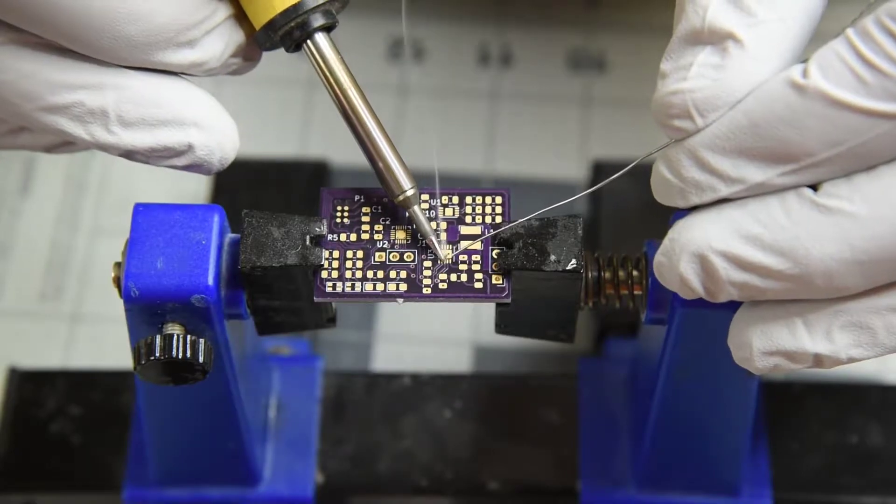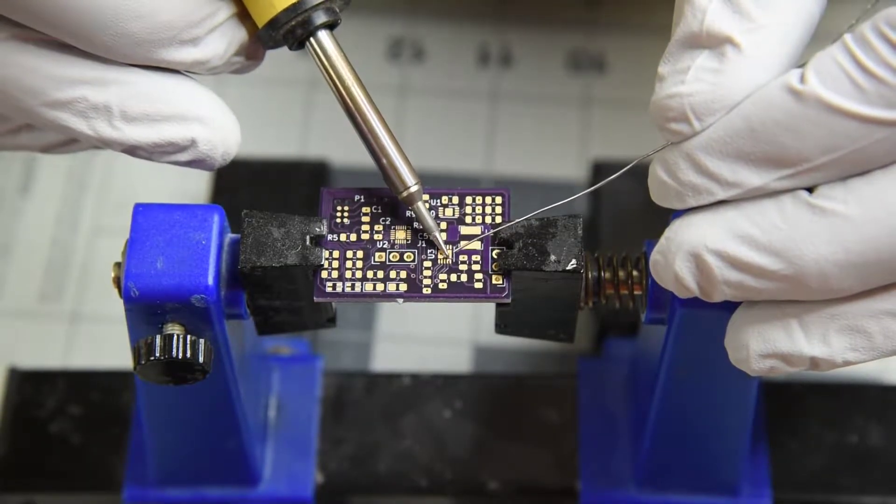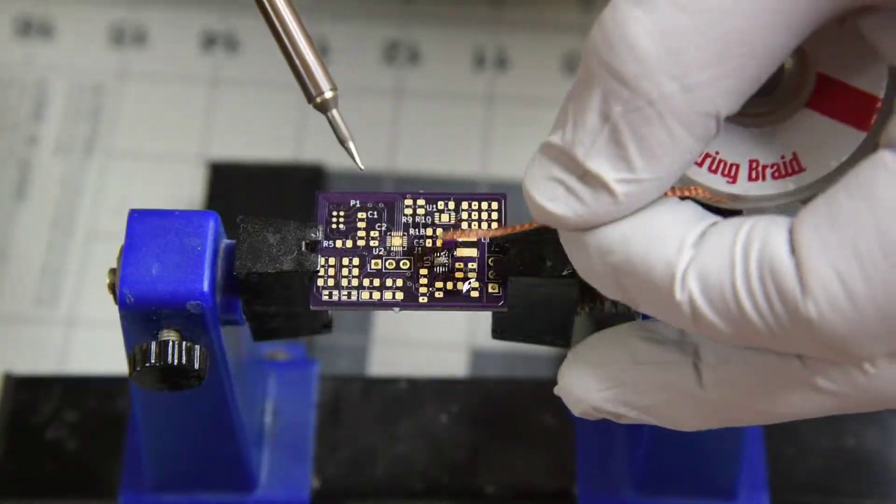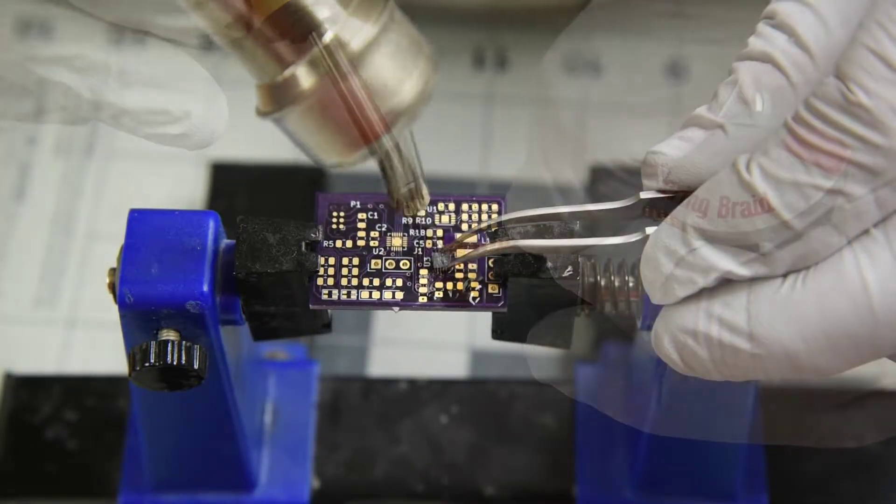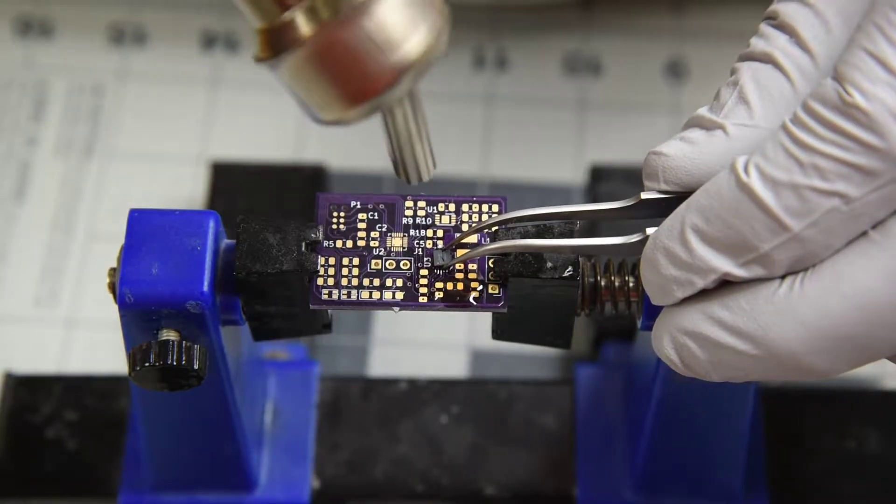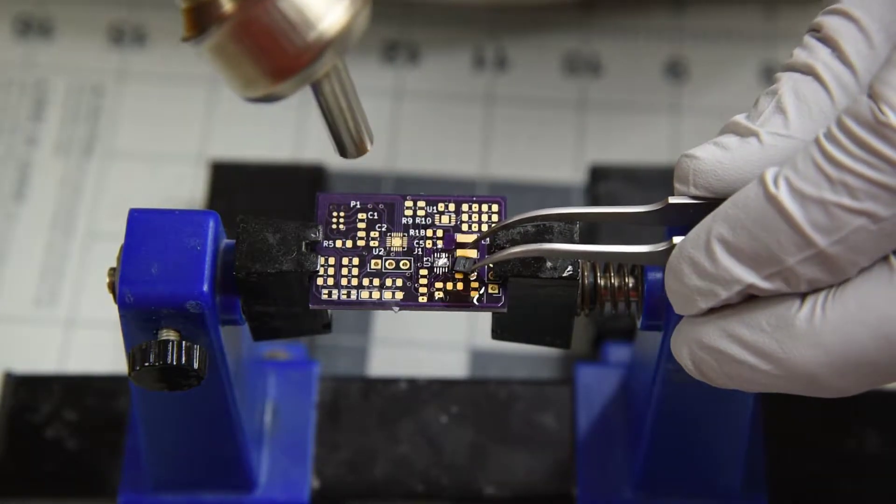I'll start with the 10-pin DFN boost regulator IC. It has two of the lead pads connected to the thermal pad. That made getting an even amount of solder on the pads a little difficult. Preheating the PC board would have helped with this, I'm quite sure.